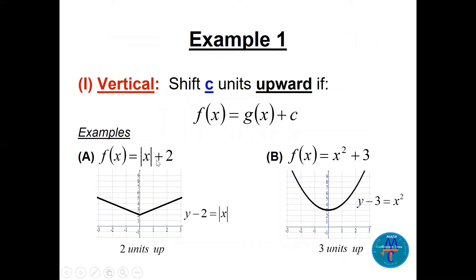Here are some examples. f(x) = |x| + 2. The absolute value is a V-shape. The plus two is outside the function, so the graph is shifted up two units. We can also bring the two to the other side: y − 2 = |x|, meaning two units up. Just be careful with the sign when moving terms across.